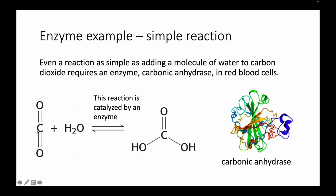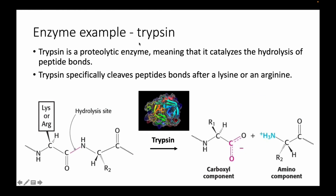Even simple reactions in the body require enzymes. For example, adding water to carbon dioxide requires carbonic anhydrase — a reaction relevant to buffers and pH, found in red blood cells. Another example is trypsin, a proteolytic enzyme that catalyzes the hydrolysis of peptide bonds, meaning it adds water to break the bond. Trypsin is very specific: it only cuts peptide bonds that follow a lysine or arginine side chain.